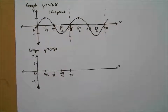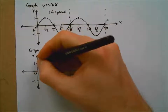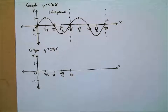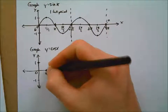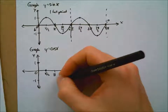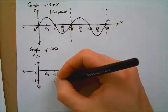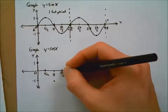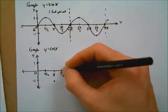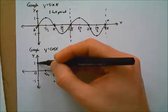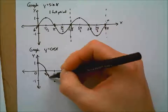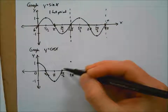We'll do the same exact thing we did for sine — just plug these numbers in. Cosine of 0 is 1. Cosine of pi over 2 is 0. Cosine of pi is negative 1. Cosine of 3 pi over 2 is 0. Cosine of 2 pi is 1. Now we connect these dots.